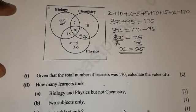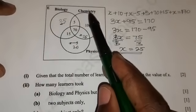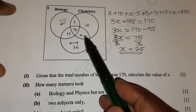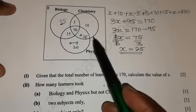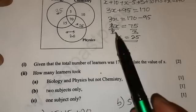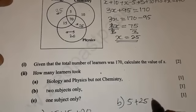So you are going to say 5. This is B, 5 plus. Again, when you look at chemistry and physics, this is the intersection of chemistry and physics. So you are going to also add 25.